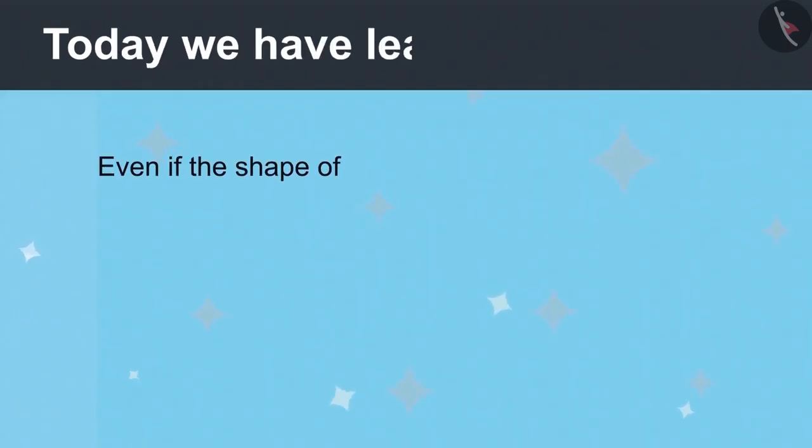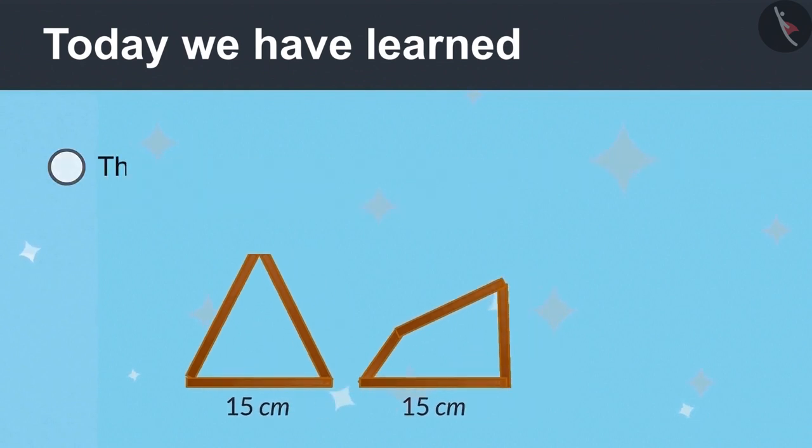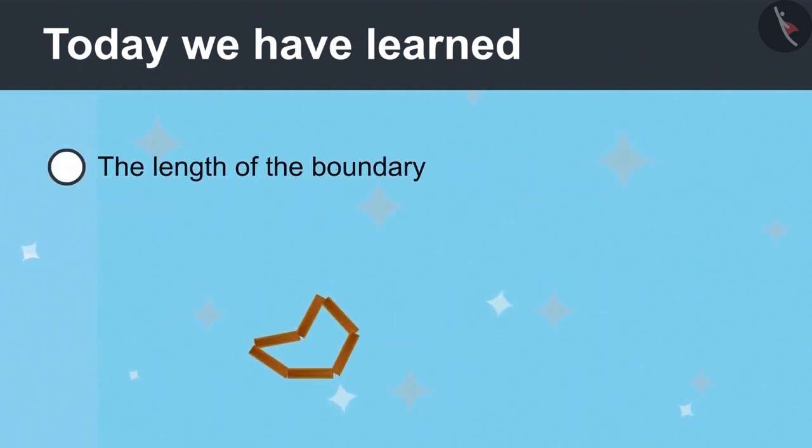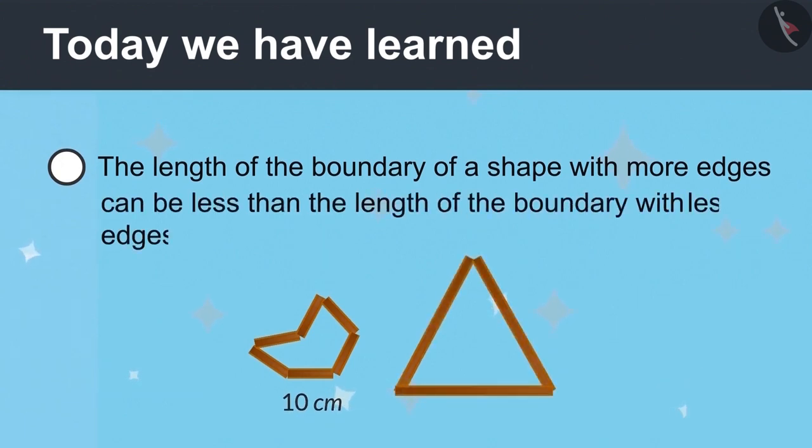Today we have learned that even if the shape of two figures is different, the length of their boundaries can be the same. And the number of edges of a shape does not affect the length of its boundary. The length of the boundary of a shape with more edges can be less than the length of the boundary with the less edges.